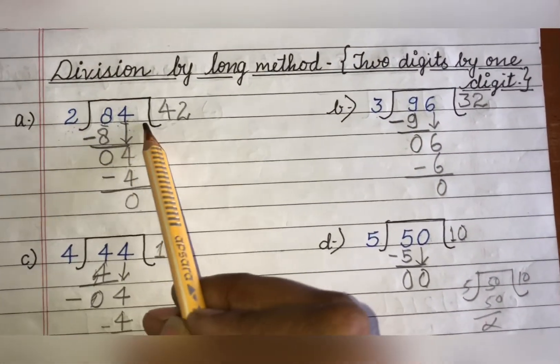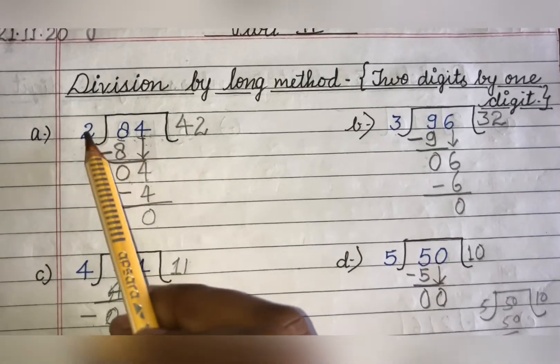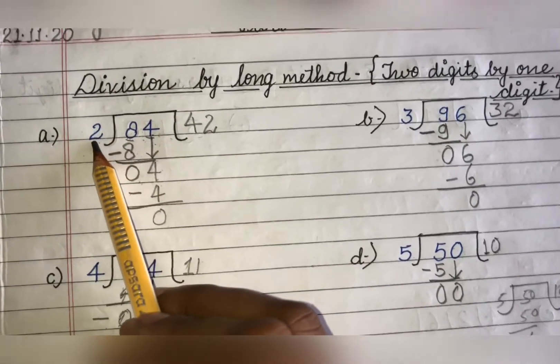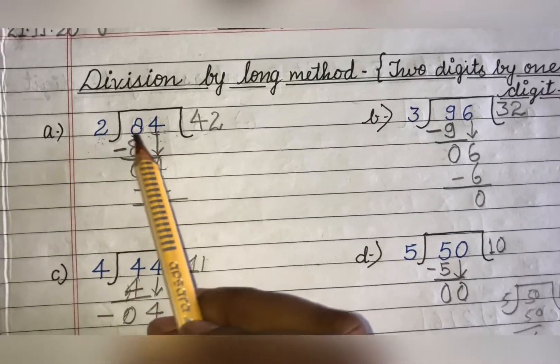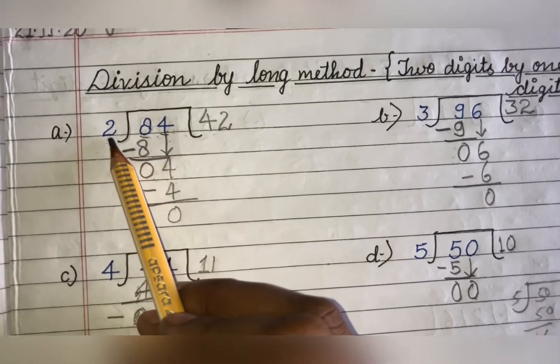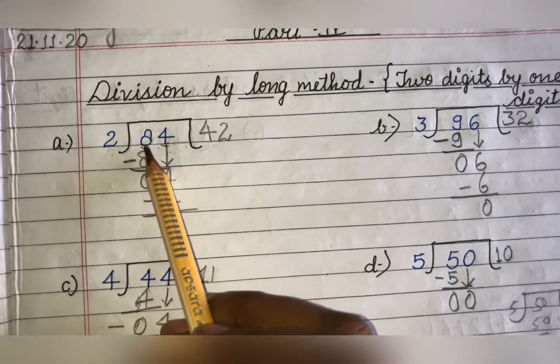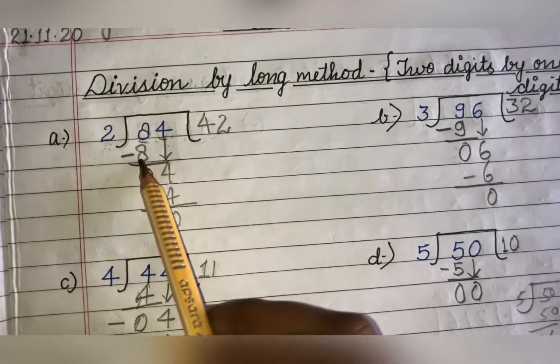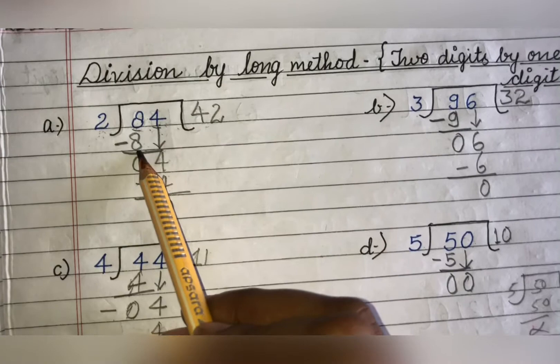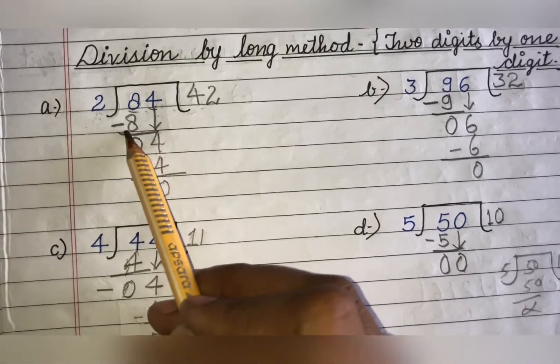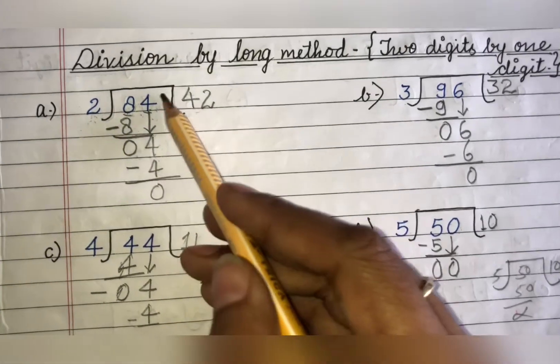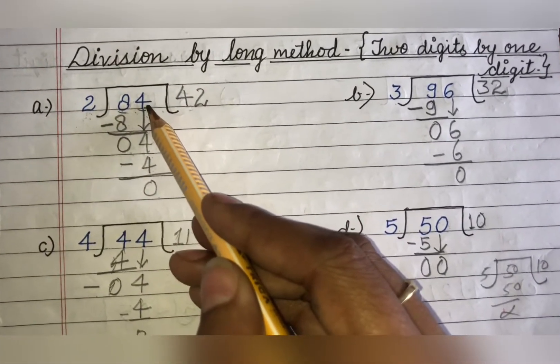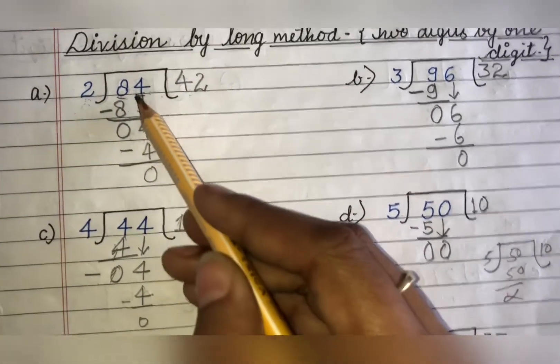Here we have 84 and you have to divide 84 by 2. So first of all you will take 8 and you will read the table of 2 until you get 8. 2 1 is 2, 2 2's are 4, 2 3's are 6 and 2 4's are 8. So 2 4's are 8. 4 you will write here, 8 you will write here and then you will minus. Here we get 8 minus 8, 0 and then you will take 4 here. You will make an arrow.